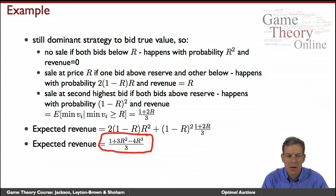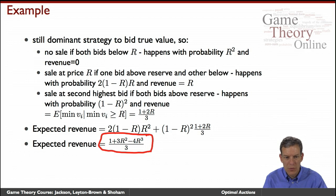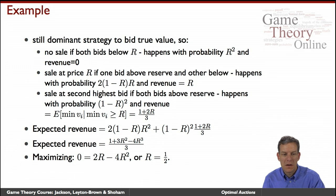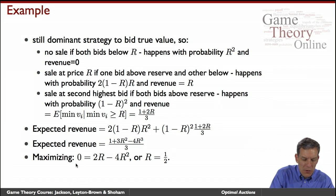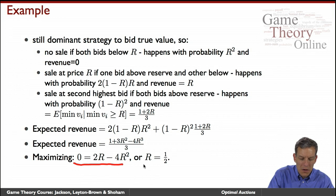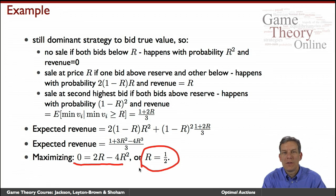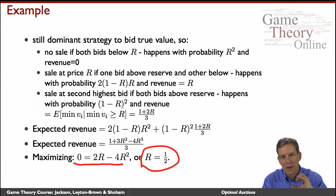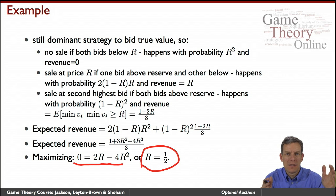Now we have an expression for revenue. We just maximize that with respect to R. Taking the derivative with respect to R and setting it equal to zero: 0 = 2R − 4R². Solving that gives R = 1/2. So if you're facing two bidders in a second price auction with uniform values on [0, 1], you set a reserve price of one half — that maximizes expected revenue.